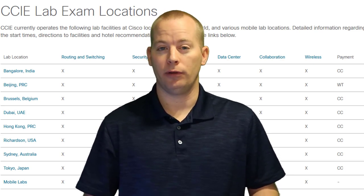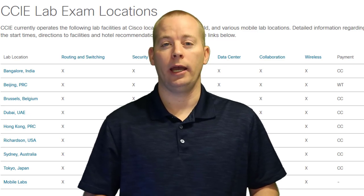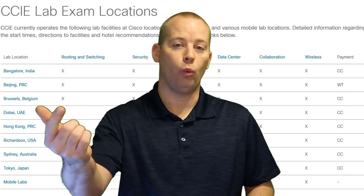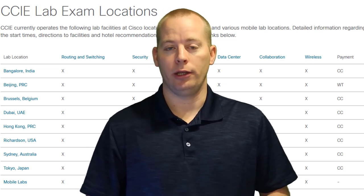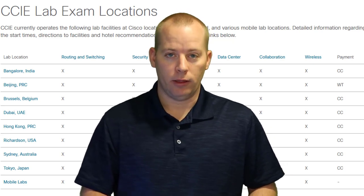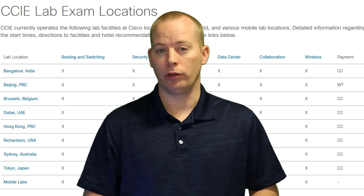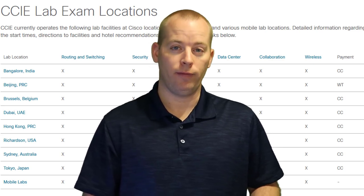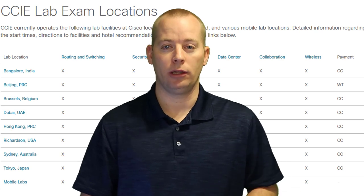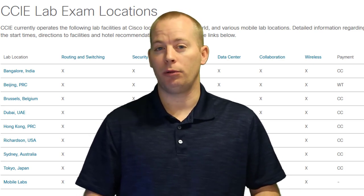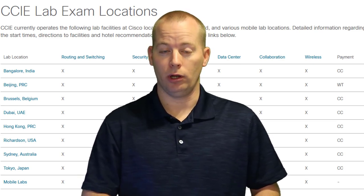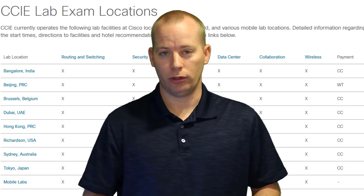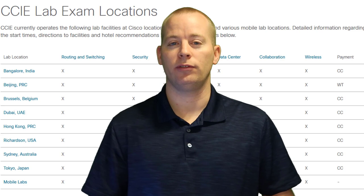For example, if there's a problem with a device in the environment that I don't have access to, I would get packet captures from the device I do have access to, get logs, and show: my device is doing X and it expects Y from your device, but your device isn't doing Y. You need to actually know what you're talking about and bring factual data. You can't try to manipulate the proctor because they know the environment and will see through fake data.